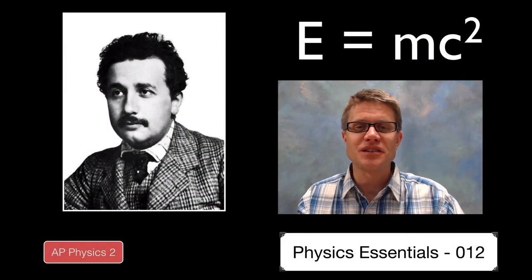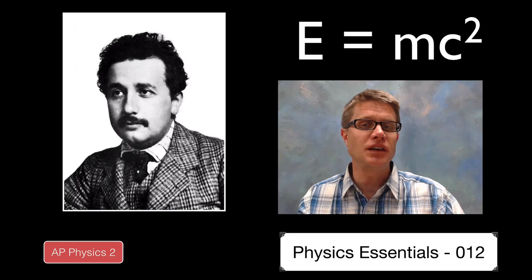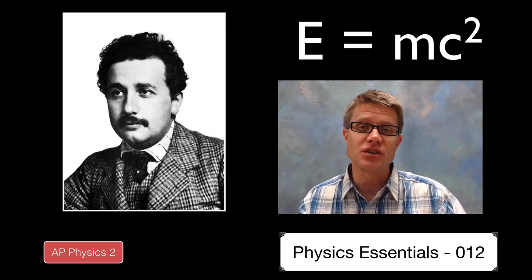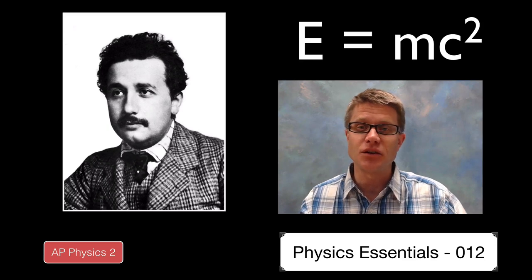Hi. It's Mr. Andersen and this is AP Physics Essentials video 12. It's on E equals mc squared. This is maybe the most famous equation in all of physics. It was developed by Albert Einstein in 1905.